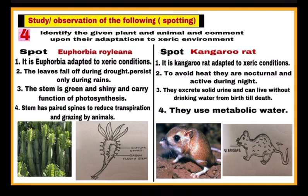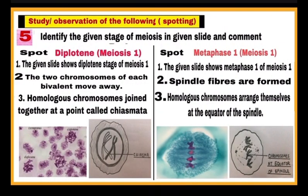Next spot is Kangaroo rat. After identification from the chart or model given, write: point one, it is Kangaroo rat adapted to xeric conditions. Point two: it is nocturnal, meaning it is active during the night. Point three: it excretes solid urine. A very interesting point about Kangaroo rat is they can live without drinking water from birth till death. Point four: they use metabolic water, meaning water which is formed during chemical reactions in the body. After this, draw the diagram and label the important parts.